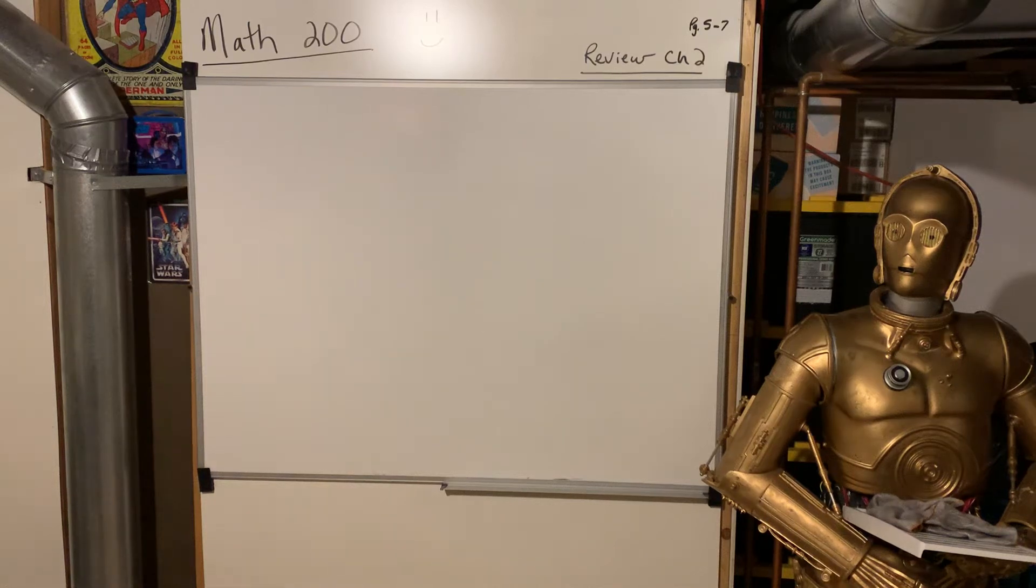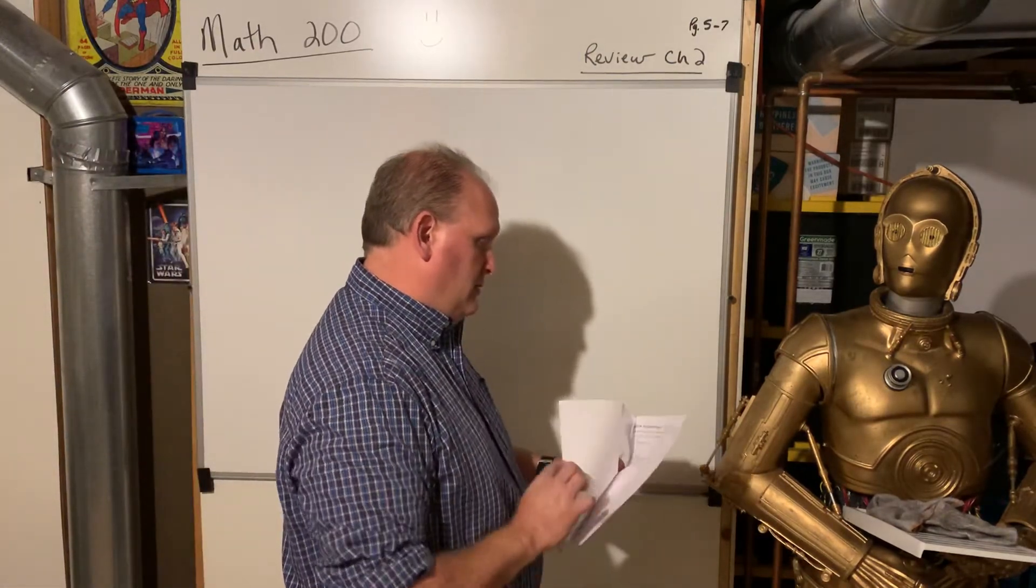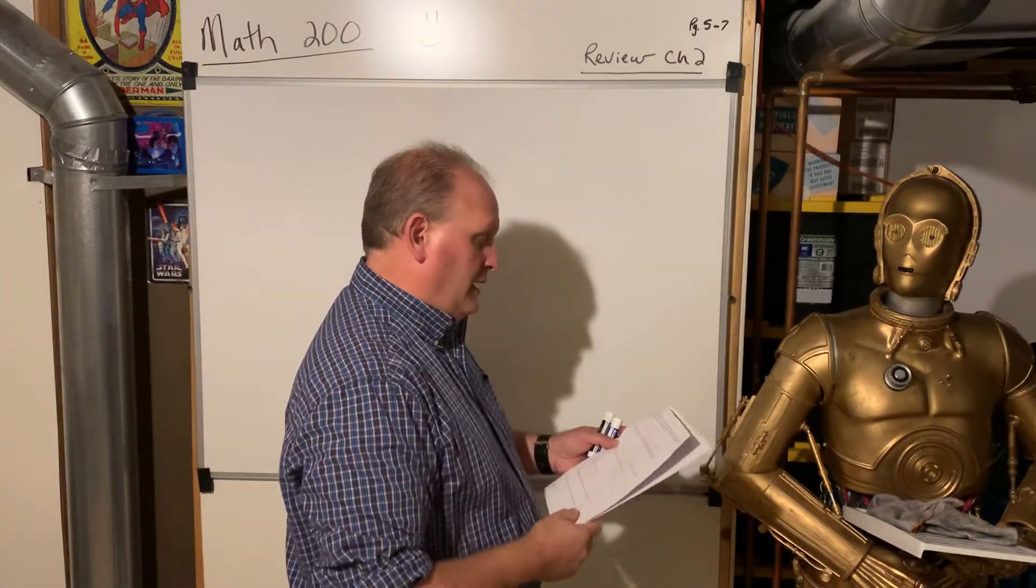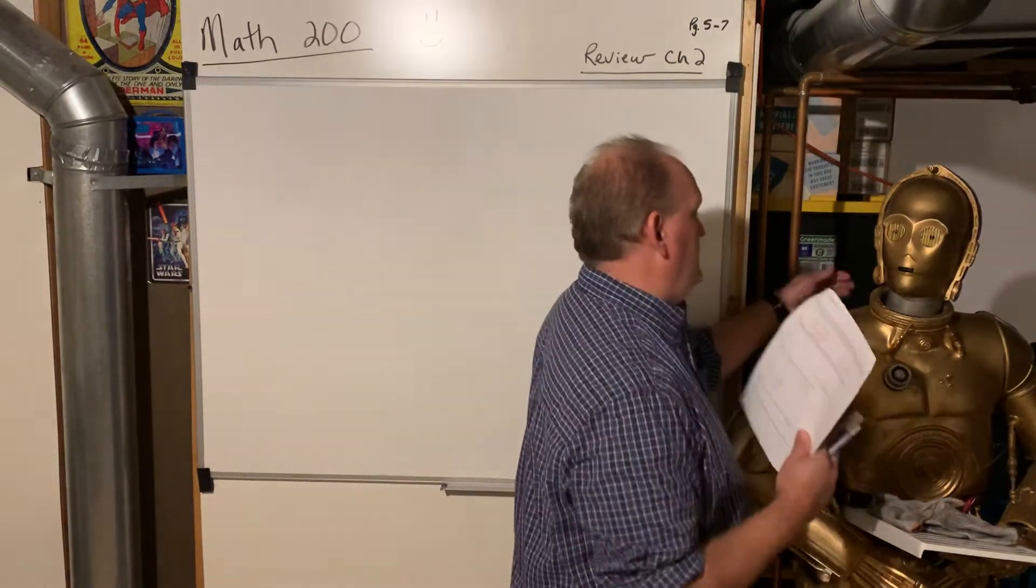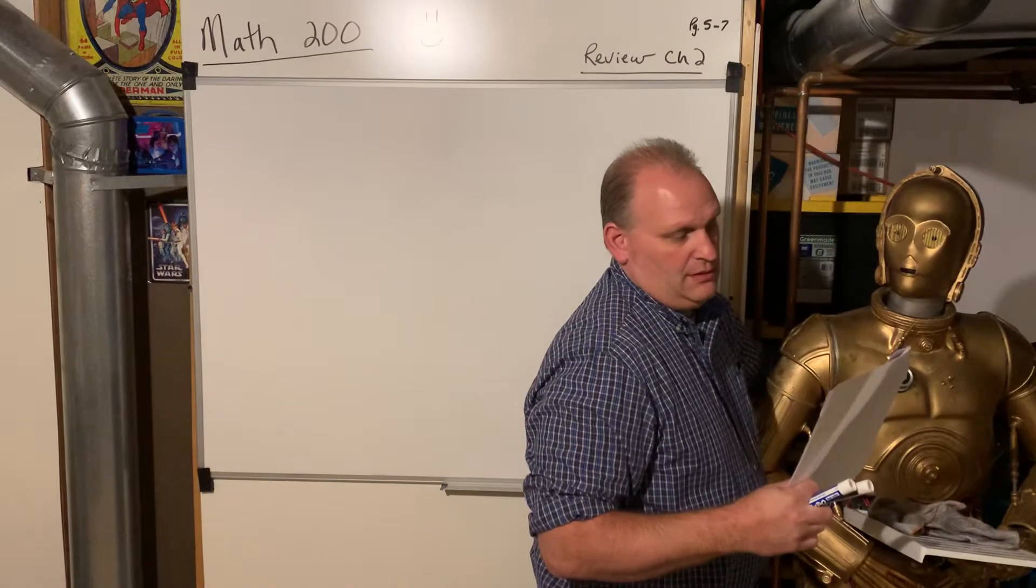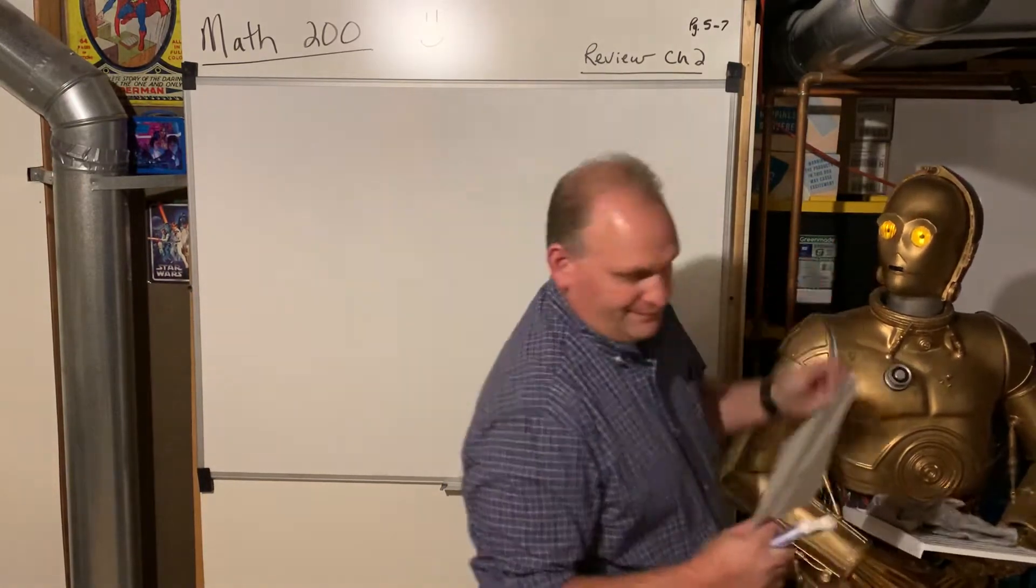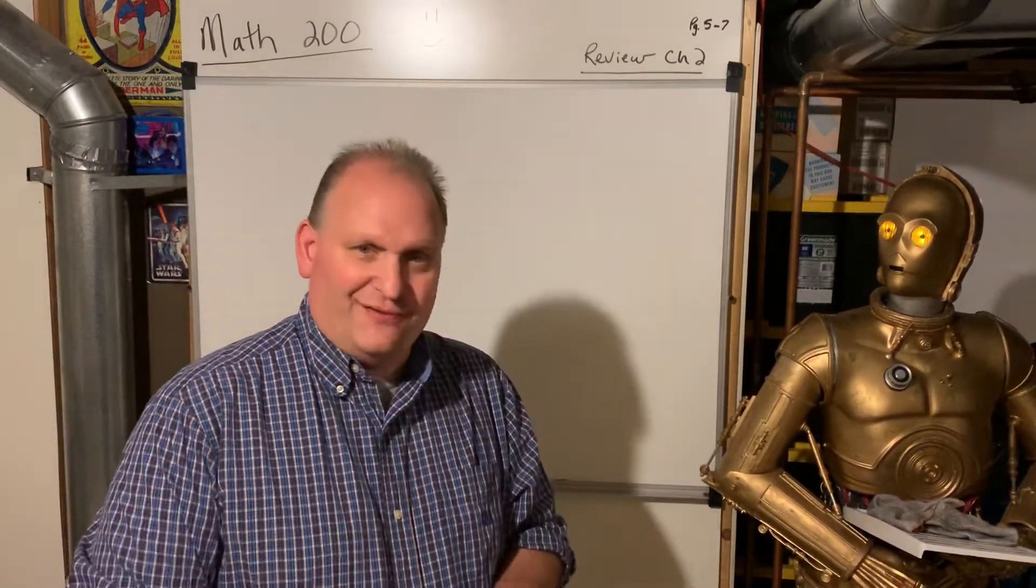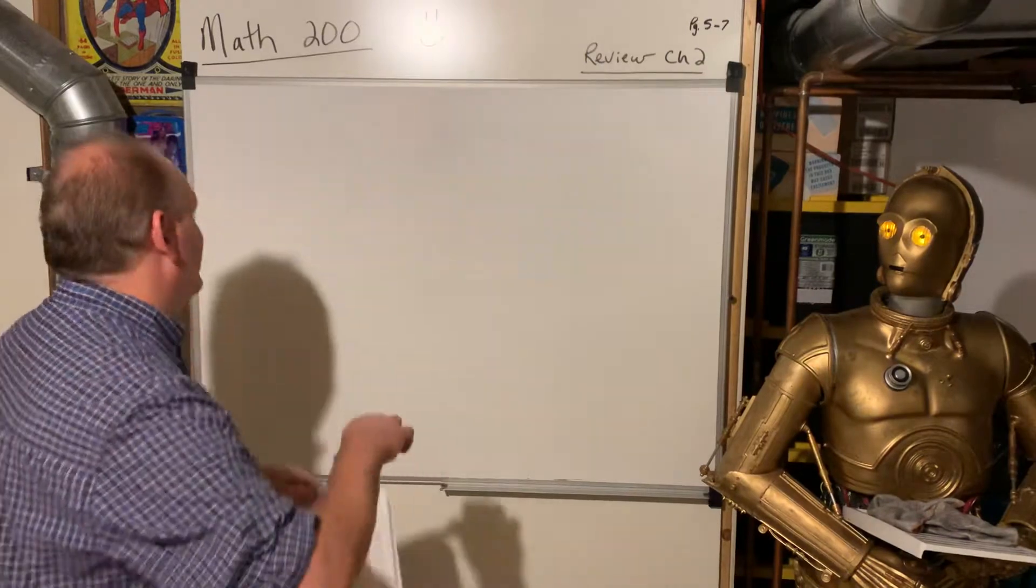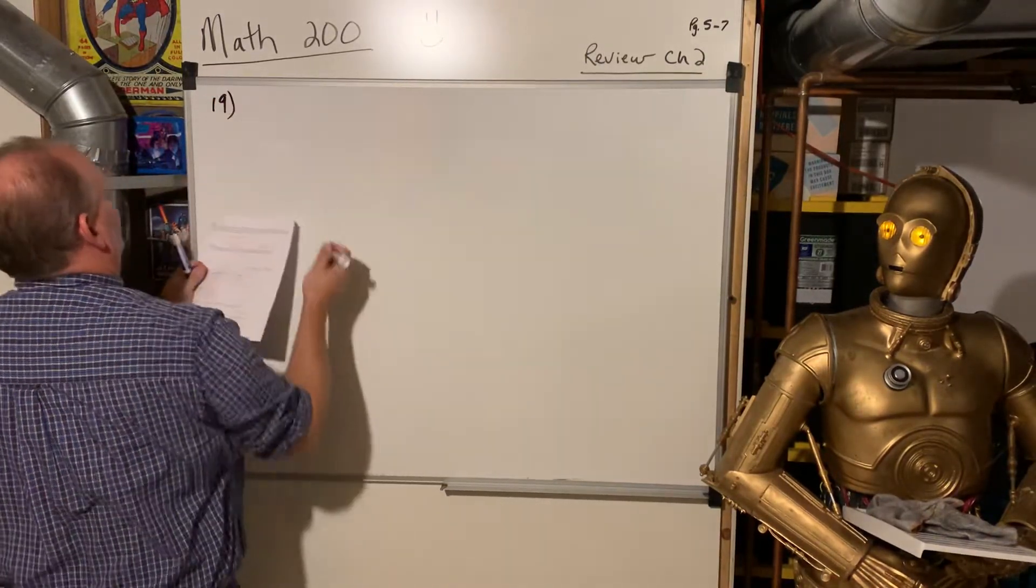Okay, we're back. This is Math 200. We're looking at the review for the chapter 2 test. I'm going to turn C3PO on so we can roll along. We're on number 19, page 5. We're going to do 5, 6, and 7. So let's do number 19 on page 5.